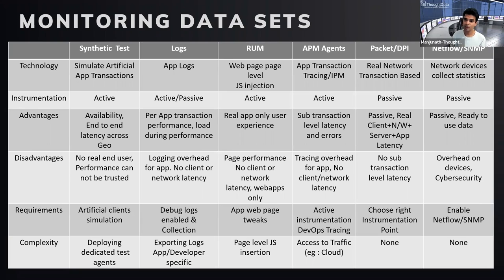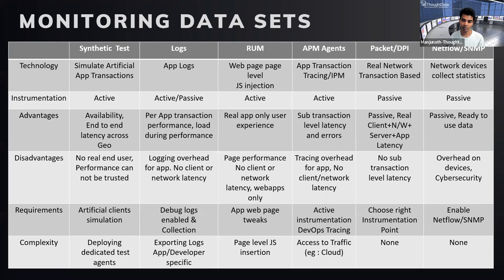Packet-based or deep packet inspection (DPI) technology intercepts live traffic from customers and provides visibility from layer two all the way up to layer seven. Everything is done passively — no overhead on application servers, no overhead on the network — making it extremely popular. NetFlow and SNMP are also common methodologies where networking devices like routers, switches, firewalls, and even many application servers provide ready-to-use information. However, NetFlow and SNMP predominantly cover layer two network traffic and don't provide much application-level visibility.